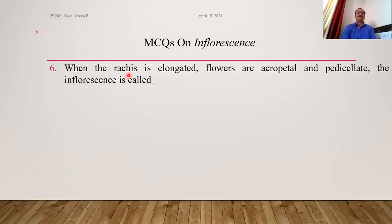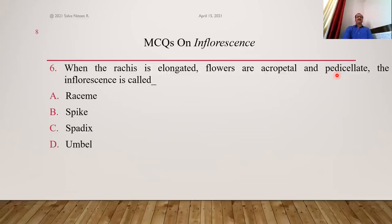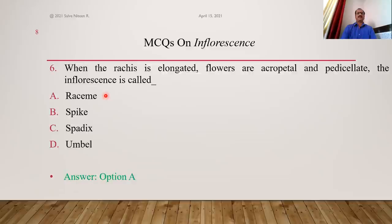When the rachis is long and elongated, flowers are acropetal (younger flowers at the apex), and flowers are pedicellate (having stalks), the inflorescence is called what? This is the fundamental racimose type called raceme — rachis is long elongated, flowers are acropetal and pedicellate with stalks. When this raceme is branched, it is called compound raceme. Option A is the right answer.